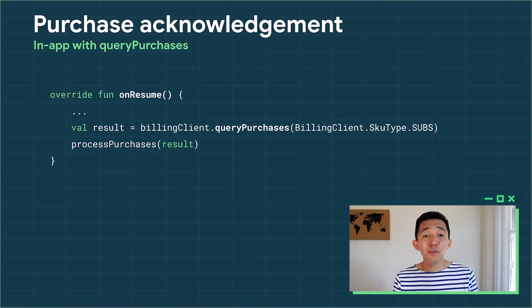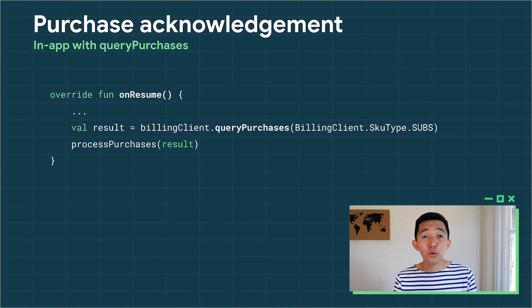And as a fallback in case of linking errors or some race conditions, your Android TV app should also check for unacknowledged purchases using query purchases in your OnResume method.